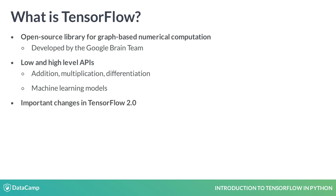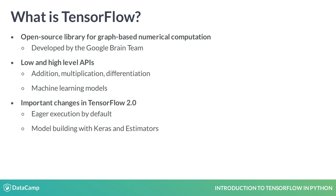TensorFlow 2.0 brought with it substantial changes. Eager execution is now enabled by default, which allows users to write simpler and more intuitive code. Additionally, model building is now centered around the Keras and Estimator's high-level APIs.